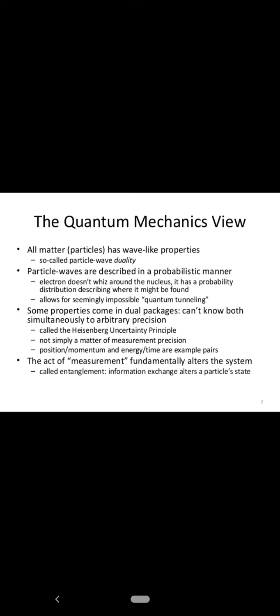If we know the exact value of the momentum, then there will be inaccuracy in the position of the particle. Similarly, energy and time can't be determined for a particle simultaneously. And the last point is the act of measurement fundamentally alters the system. This is called entanglement.